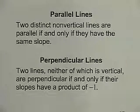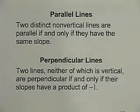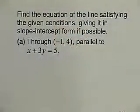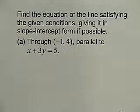The last form of the equation of a line is the standard form, given by ax plus by equals c. This form makes it easy to find the x and y intercepts, which is helpful for graphing. Another concept to look at is parallel and perpendicular lines. Two distinct non-vertical lines are parallel if and only if they have the same slope. Two lines, neither of which is vertical, are perpendicular if and only if their slopes have a product of negative 1. Let's look at an example: find the equation of the line through the point (negative 1, 4) that is parallel to the line x...